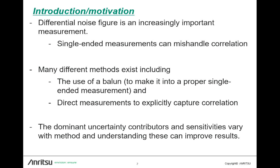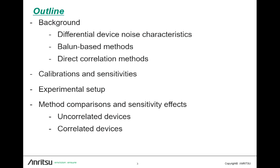There are a lot of different ways around that, and there have been for decades. A couple we'll focus on are some variants on using a balun to make it into a pure single-ended measurement, and some direct measurements that explicitly capture correlation, which sort of follow in step with some of the earlier talks today. What we're really going to focus on in this talk is some of the dominant uncertainty and sensitivity kinds of terms and how they behave amongst these different methods, with a little bit of background on the methods and exploring the parameter space of interest.